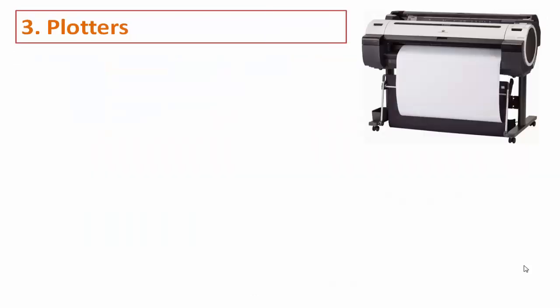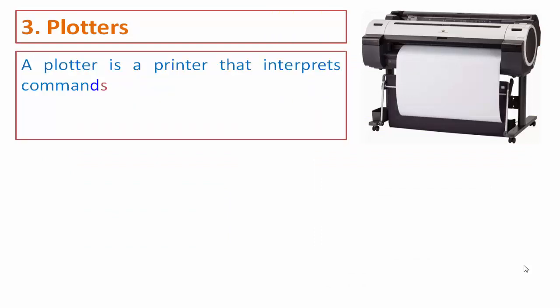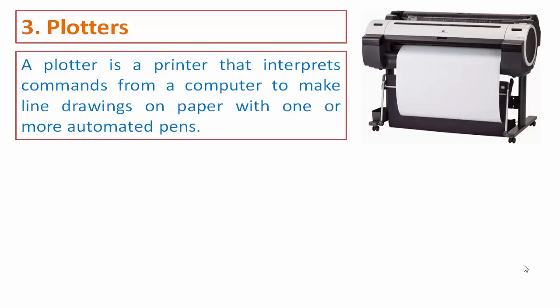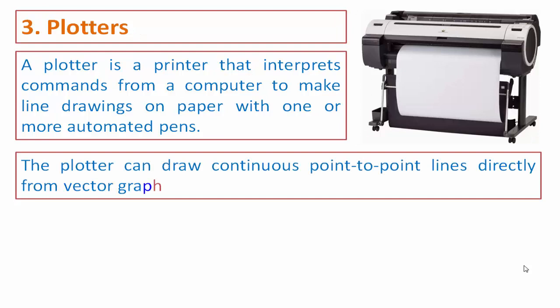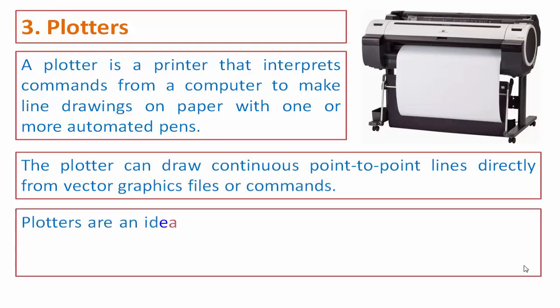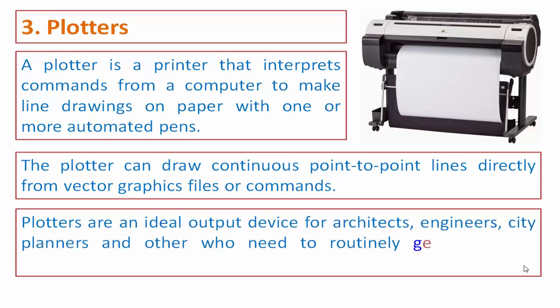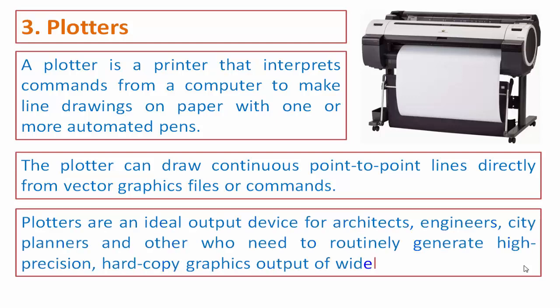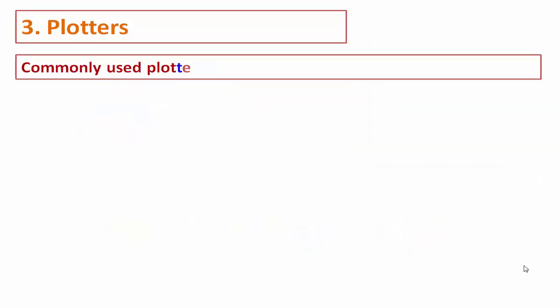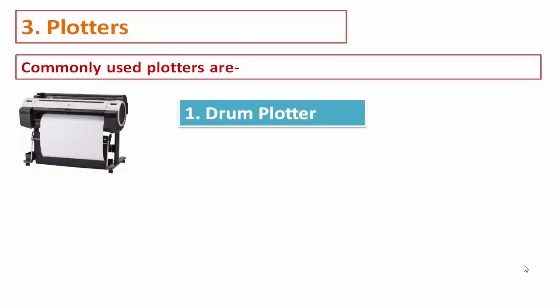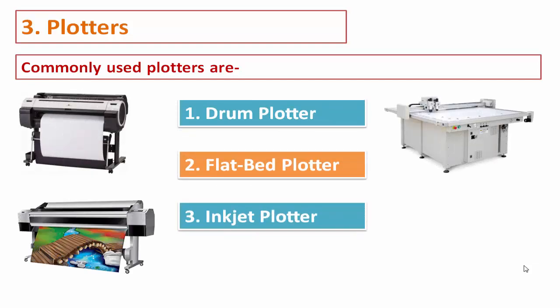A plotter is a printer that interprets commands from a computer to make line drawings on paper with one or more automated pens. The plotter can draw continuous point-to-point lines directly from vector graphics files or commands. Plotters are an ideal output device for architects, engineers, city planners, and others who need to routinely generate high-precision hard copy graphics output of widely varying sizes.